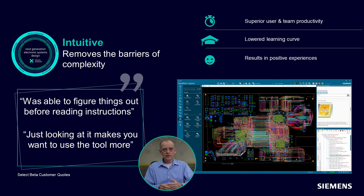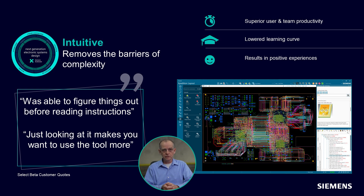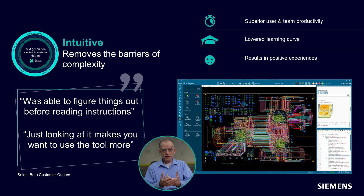Let's talk about these five pillars in more detail, starting with intuitive. What we've really done is created a new user experience that permeates throughout our entire product set. This lowers the learning curve for users to become productive, removes barriers to adoption, and really creates a sense of positivity in how they operate with the tools. The user experience is configurable for new users versus power users, and we spent a lot of time working with different user communities to validate the experience.